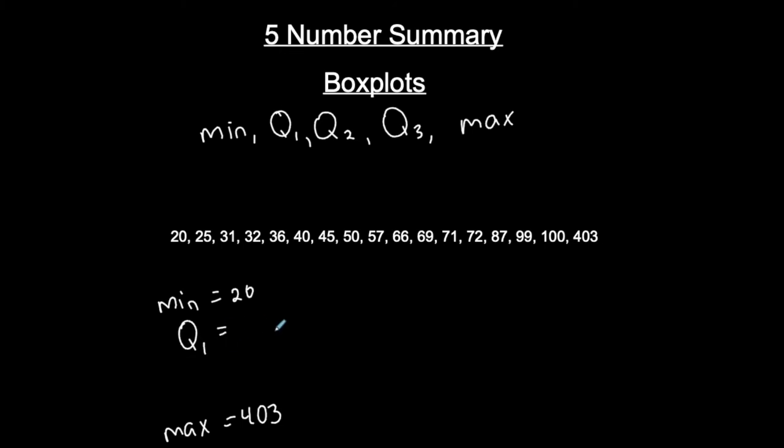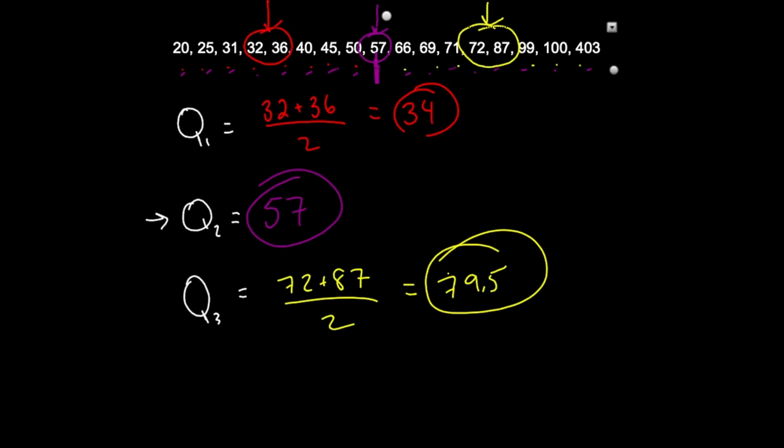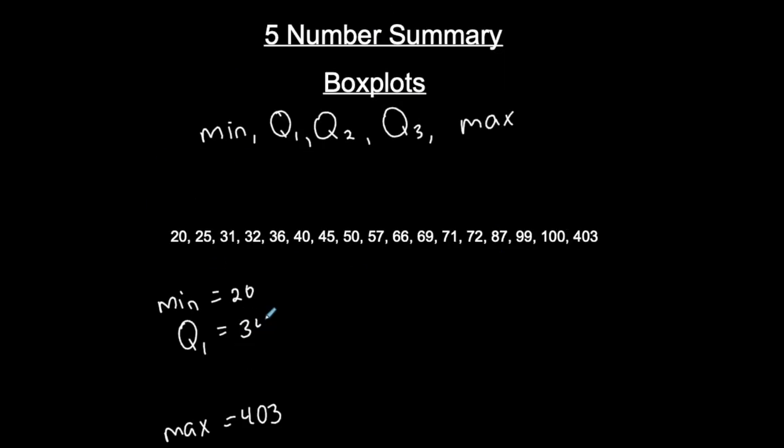Q1 we kind of already did right, Q1 was 34. Q2 which was the median was 57 and Q3 was 79.5. So this is my five number summary for this particular set of data.